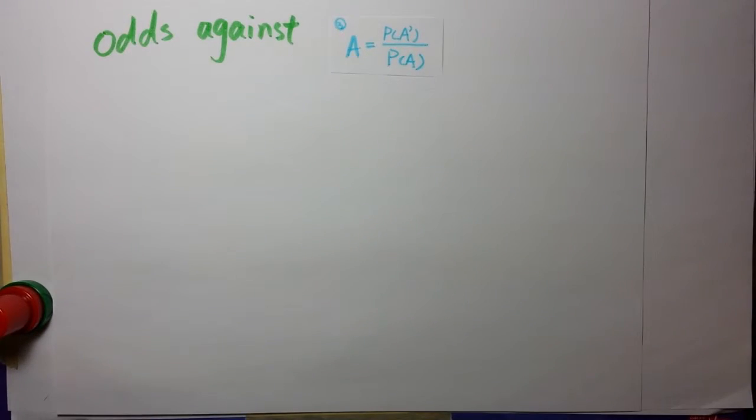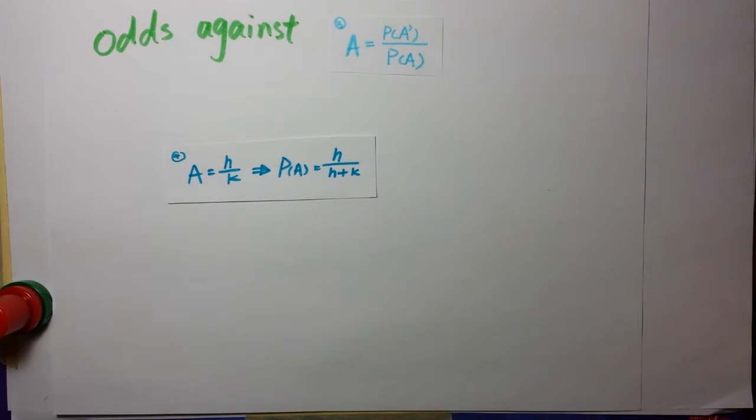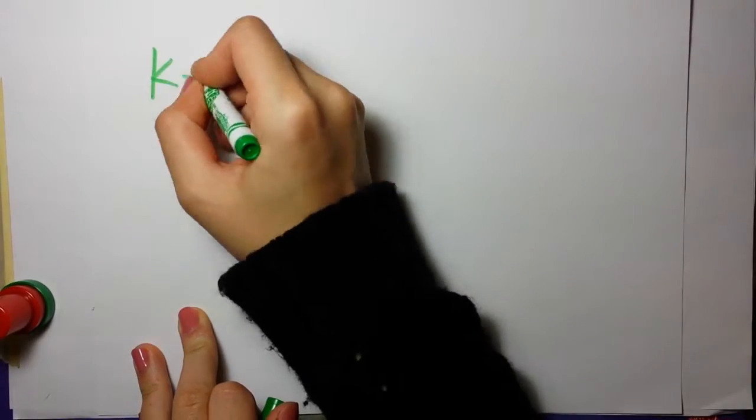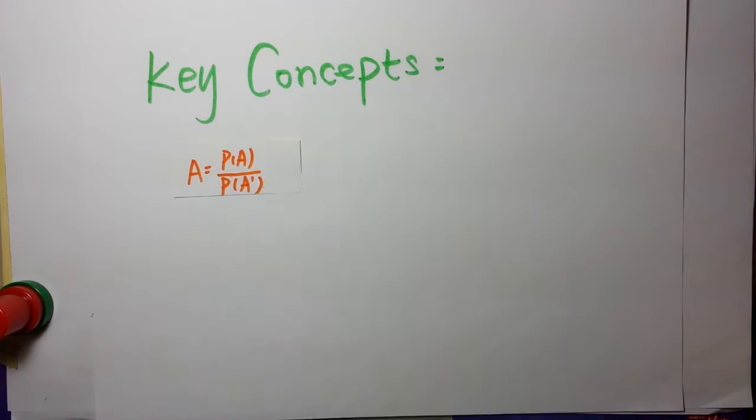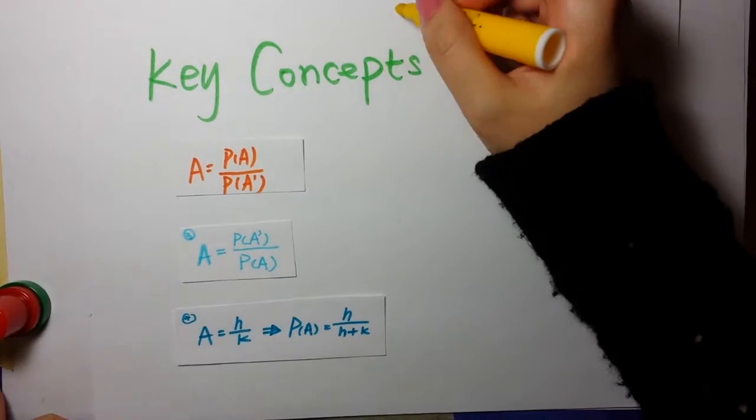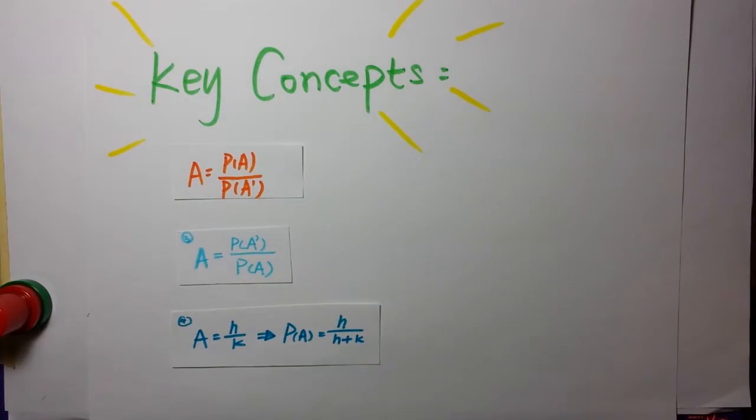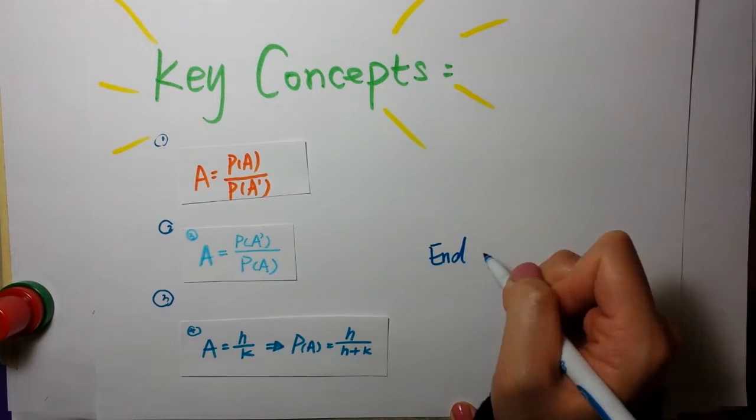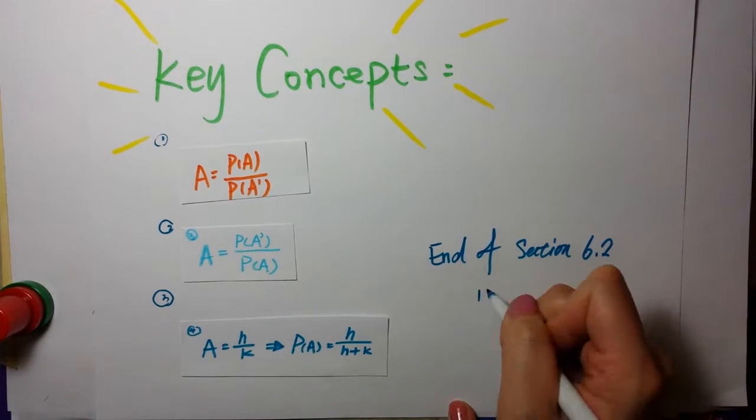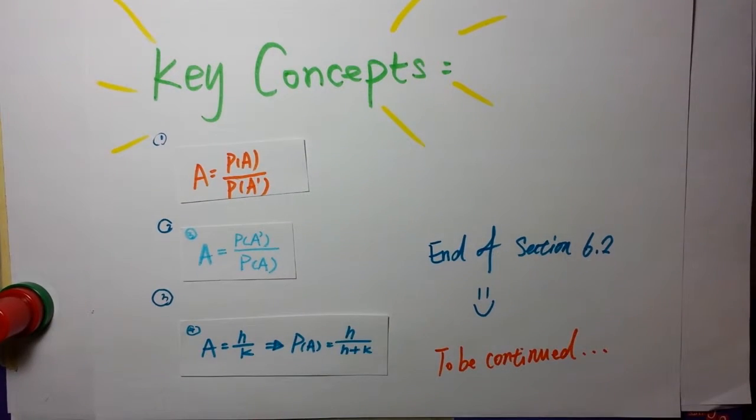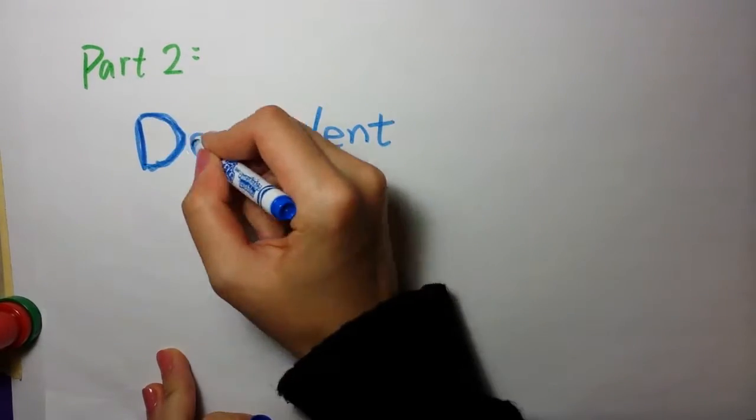A common variation on the theme of odds is to express the odds against the event happening. Odds against A equal P(A complement) over P(A). So those are our key concepts. The odds in favor of A are given by the ratio P(A) over P(A complement). The odds against A are given by the ratio P(A complement) over P(A). If the odds in favor of A are H over K, then P(A) equals H over H plus K. This is the end of section 6.2.